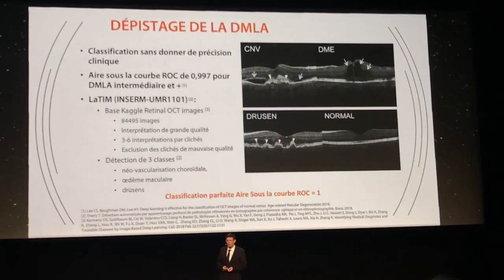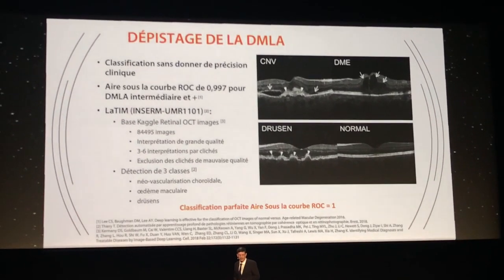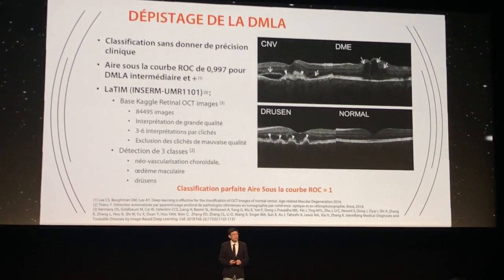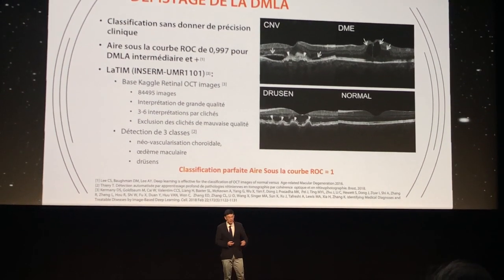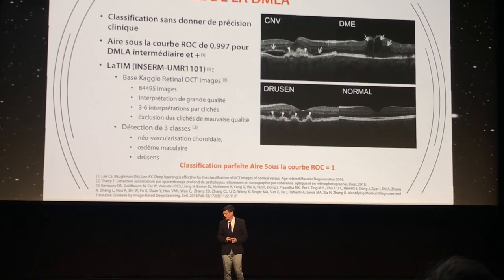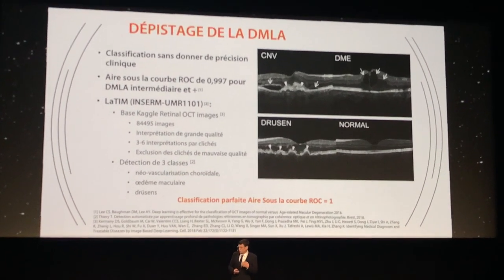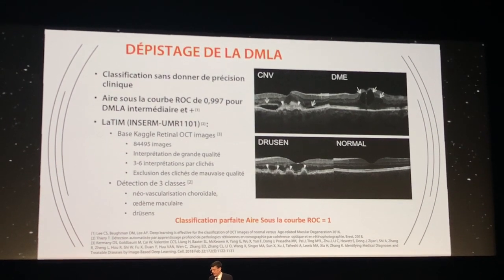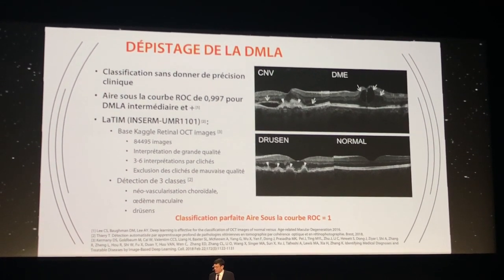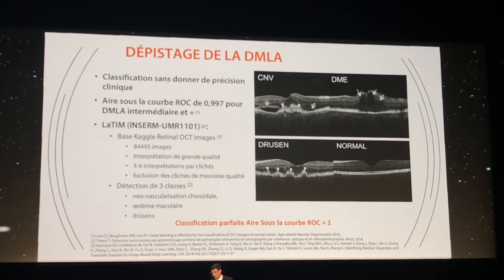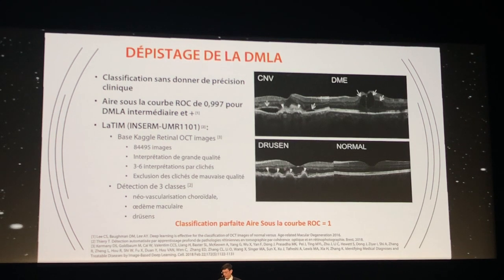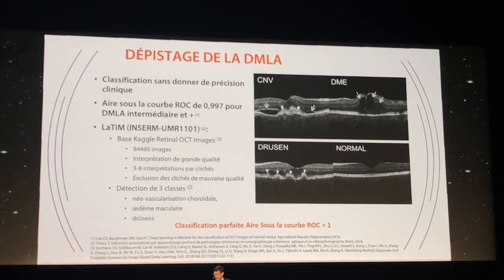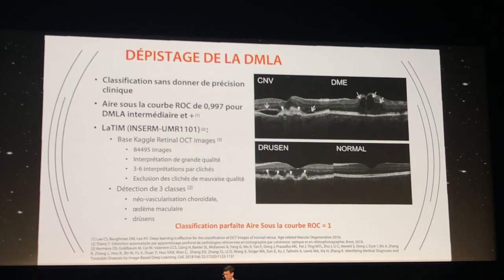We can also perform AMD screening. The idea here is to simply assign a label to an image — does it have AMD or not — performing classification without giving any clinical detail. In various papers, we find AUC values on the ROC curve of 0.997 — knowing that the maximum AUC is 1 — yielding very, very good results.